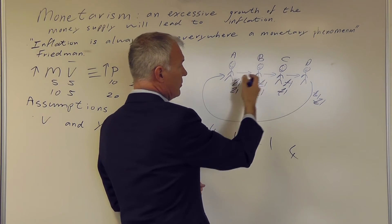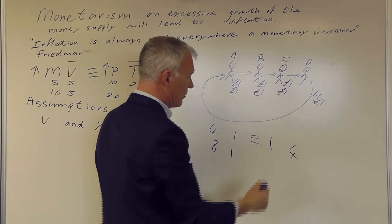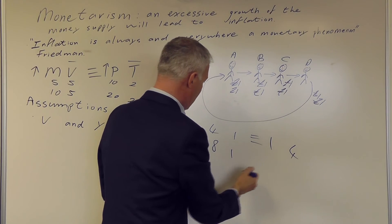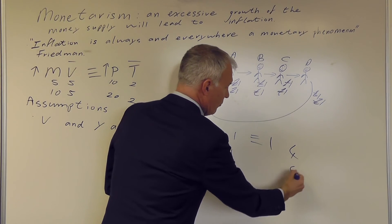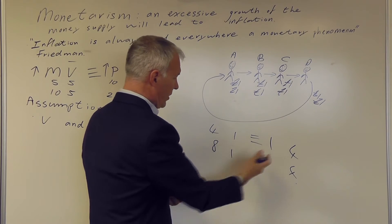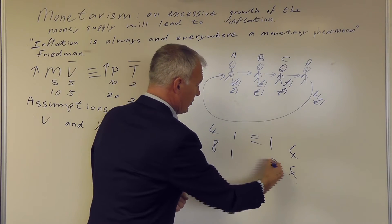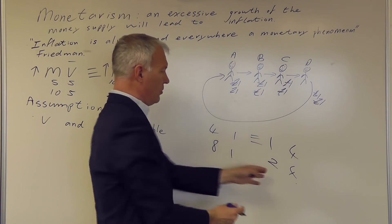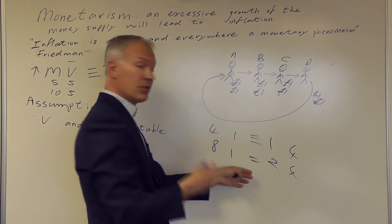Those 2 pounds, each pound is moving one person. The number of goods in the economy is still 4 transactions. But, of course, the price level has doubled. So that 2 times 4 equals 1 times 8.